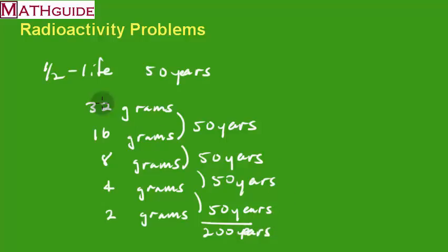It took 200 years to go from 32 grams to 2 grams. And that kind of demonstrates what this term half-life means, because it's going to be thrown around a lot with radioactive substances and problems that deal with those substances.